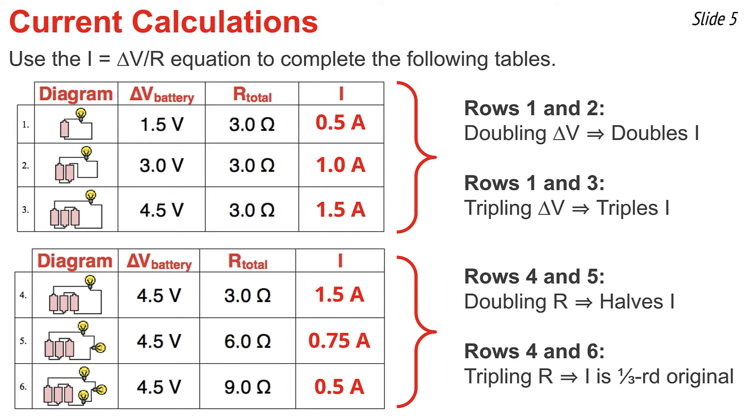Now let's look at rows 4 and 6. I notice the resistance has tripled between those two rows. And since we tripled the resistance, we've caused the current to go down by a factor of a third. It was 1.5 amps and now is one-third of that value, 0.5 amps. In other words, current and resistance are inversely proportional.